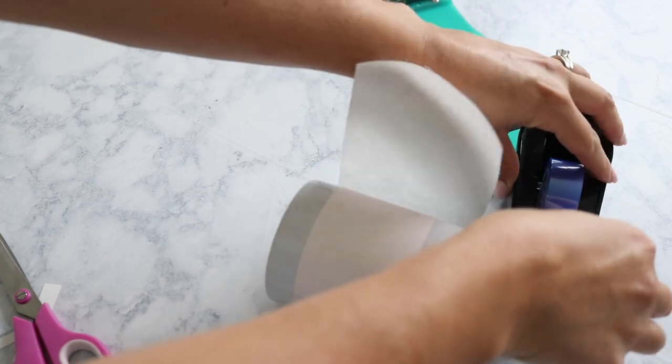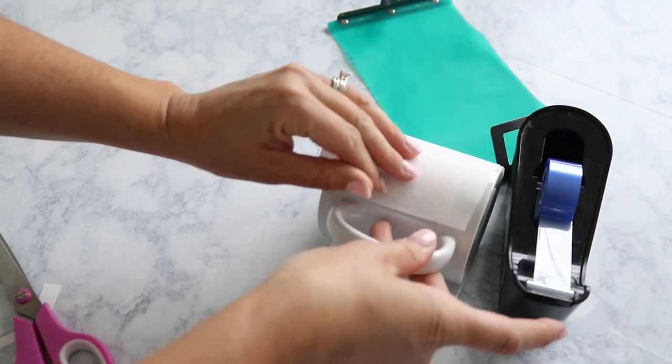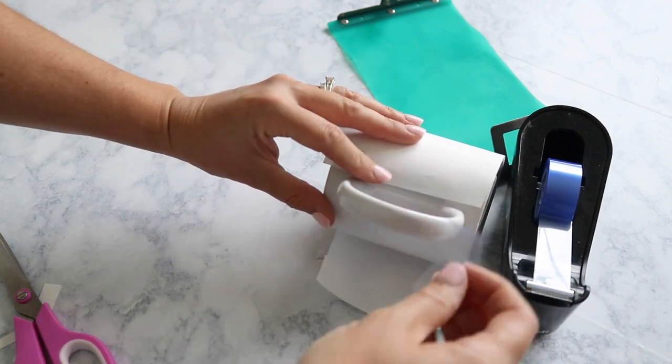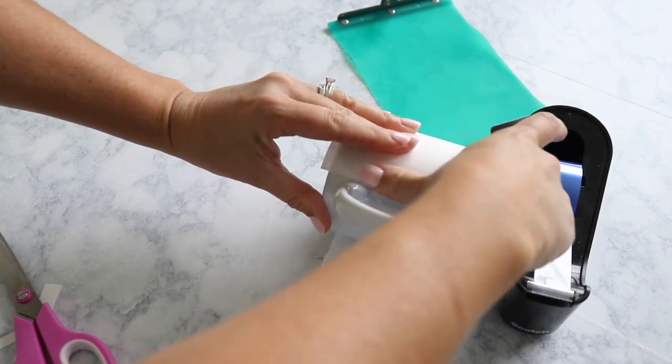The next step is to add a layer of butcher paper over top of the sublimation paper that we just taped down. So I just cut this butcher paper to size and I am using the heat resistant tape to tape it in place.